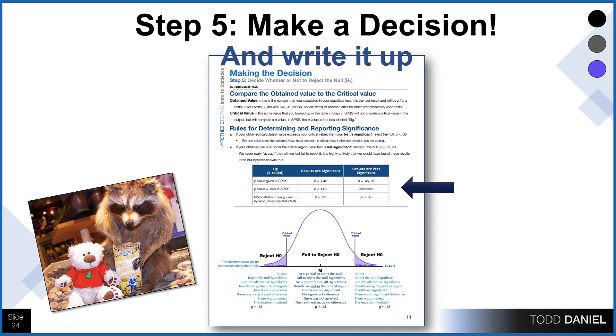Step number five: we're going to look at the findings and make a decision. Then we're going to write up our results in APA style so that we could present them. I'm going to give you some resources that you can use not only for this class but also moving forward, so that you will have something to fall back on when it comes time to write up your results. And that, very briefly, is what we're going to learn about with these five steps of hypothesis testing.